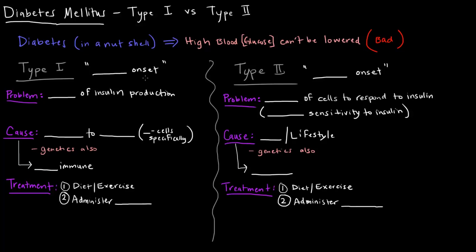So what's the difference between type 1 and type 2? Type 1 is normally called juvenile onset and type 2 is usually called adult onset. Now those terms can be a little bit misleading, although they can be helpful to remember some details. Essentially the root difference is that the problem with type 1 diabetics is they have a loss of insulin production.